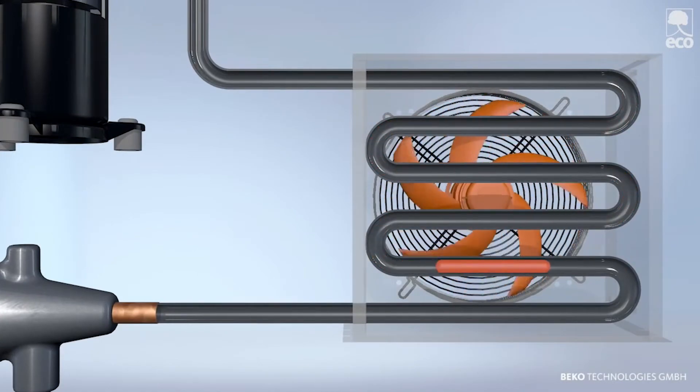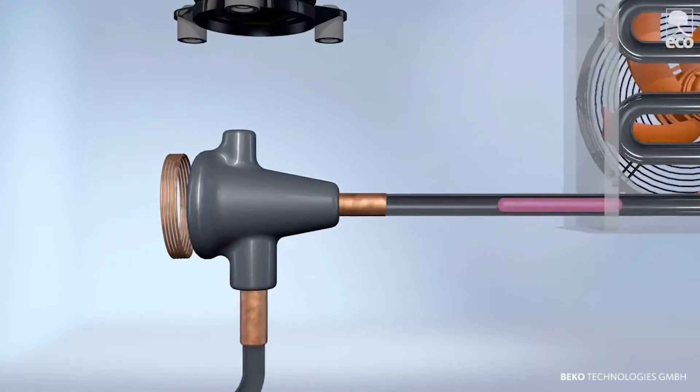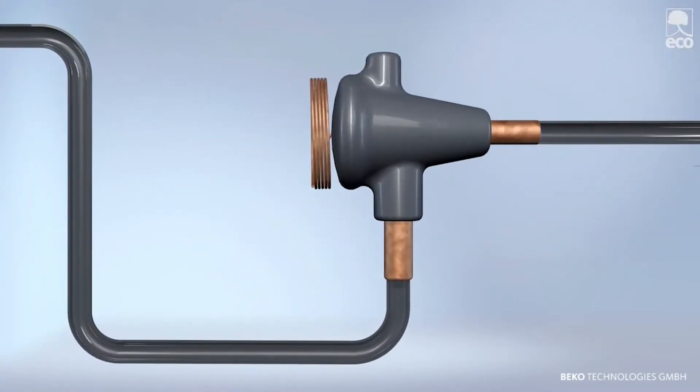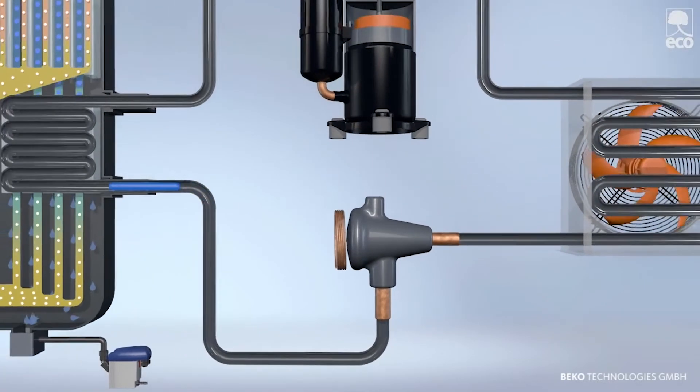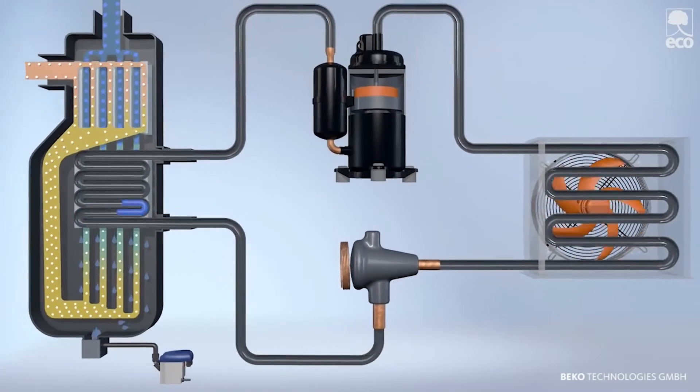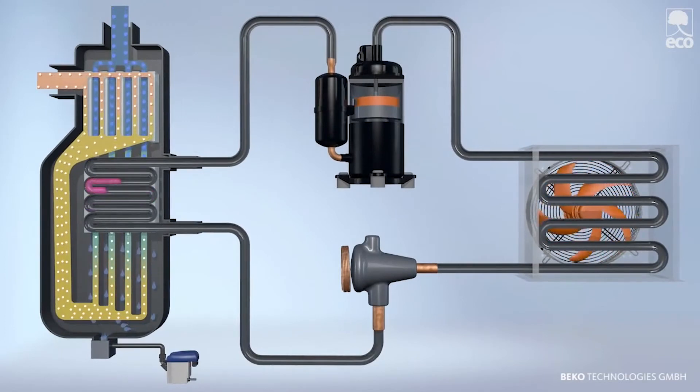Liquid but still under high pressure, the refrigerant expands in the expansion device. The pressure decreases during this process, also resulting in a sharp decrease of temperature, which provides the heat exchanger with the necessary cooling capacity. The refrigerant evaporates and is drawn in by the compressor again, and the cycle begins once more.